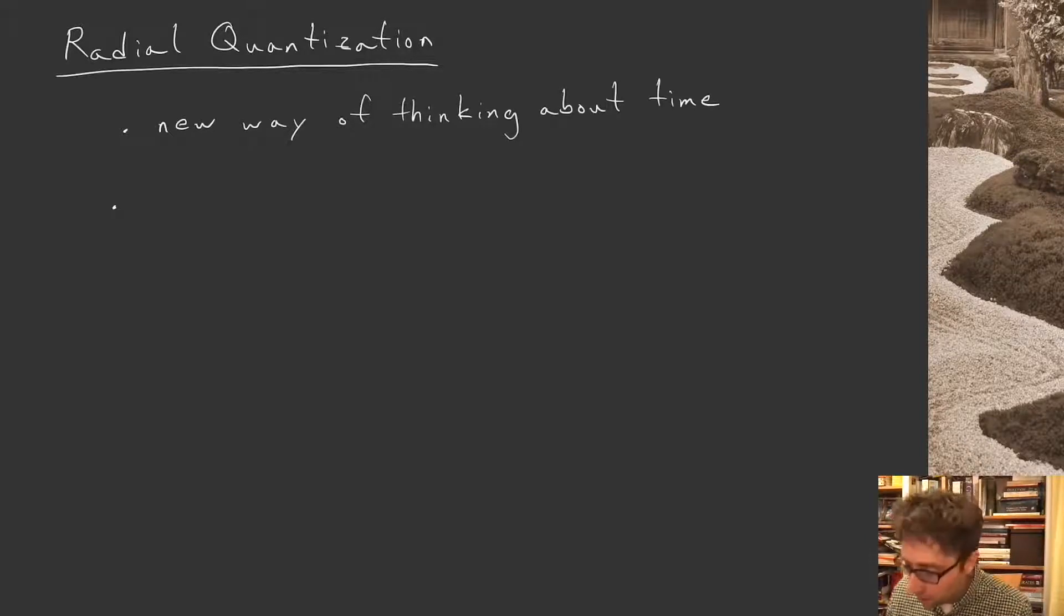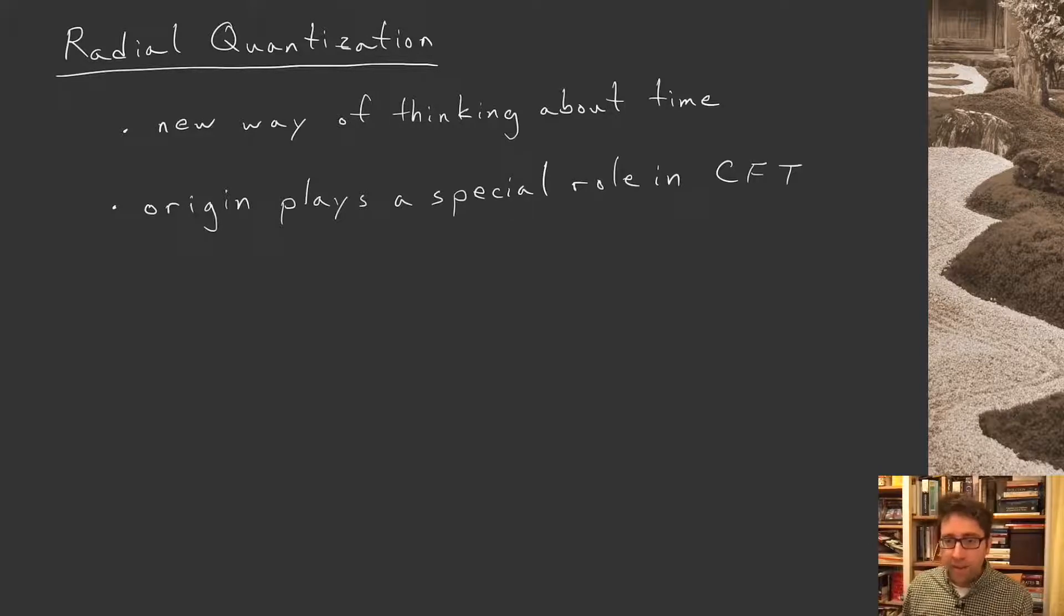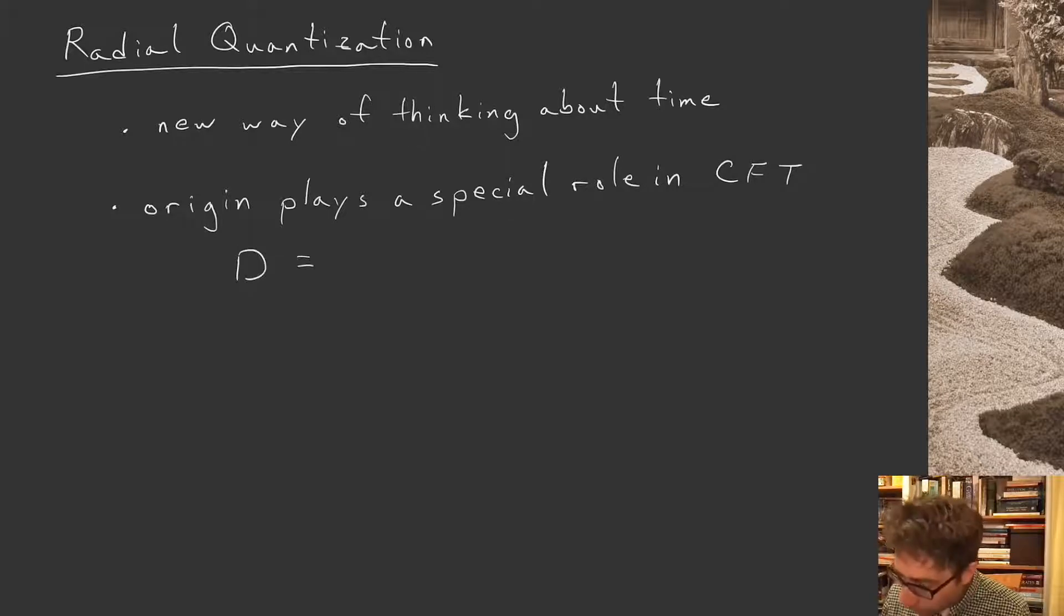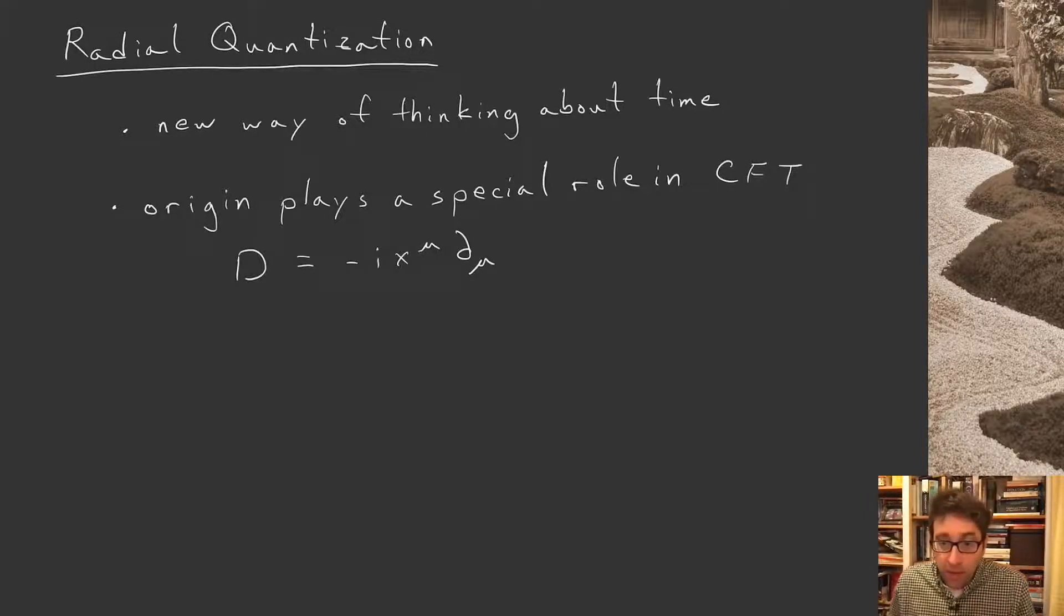Where does this new notion come from? It comes from the dilatation operator. The origin of the coordinate system plays a special role in CFT. And why is that? It's because of our choice of generators. We choose the dilatation operator to have this special form, D = -ix^μ∂_{x^μ}. And this operator will vanish at the origin.